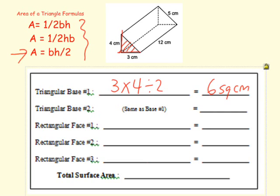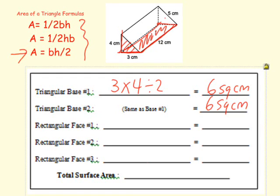Remember, these bases are congruent, so they're going to have the same area — this base is also 6 square centimeters. Now for rectangular face number 1: I'll do this bottom rectangle. Using length times width, that's 3 times 12, which equals 36 square centimeters.